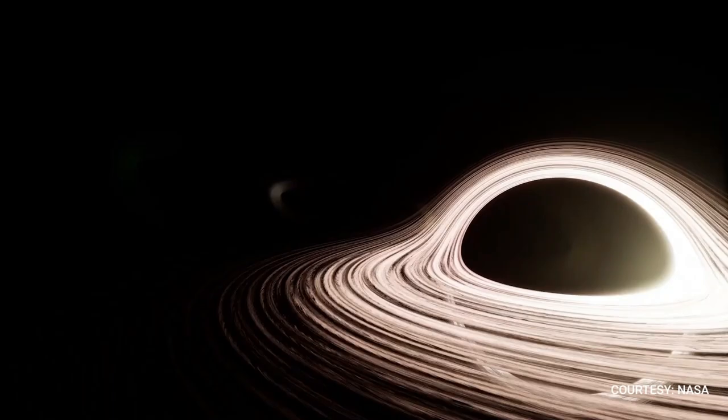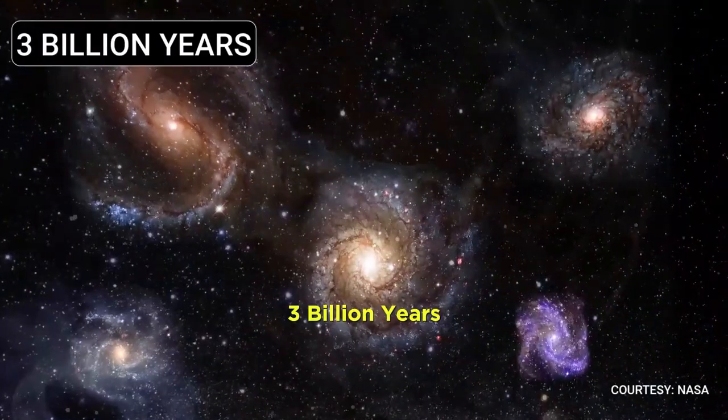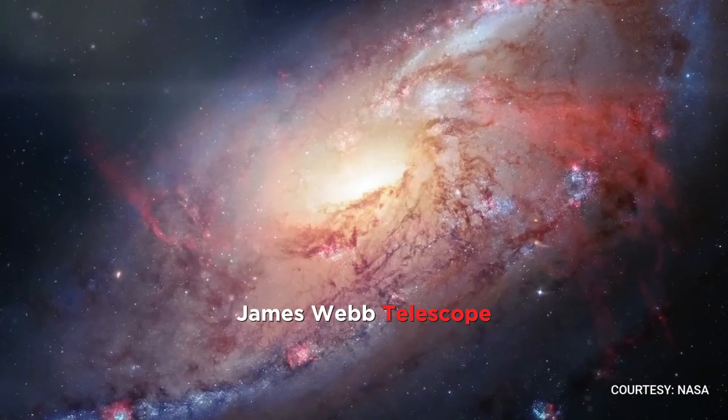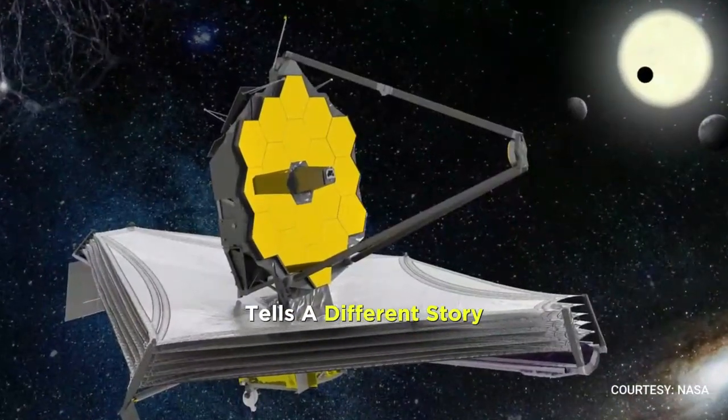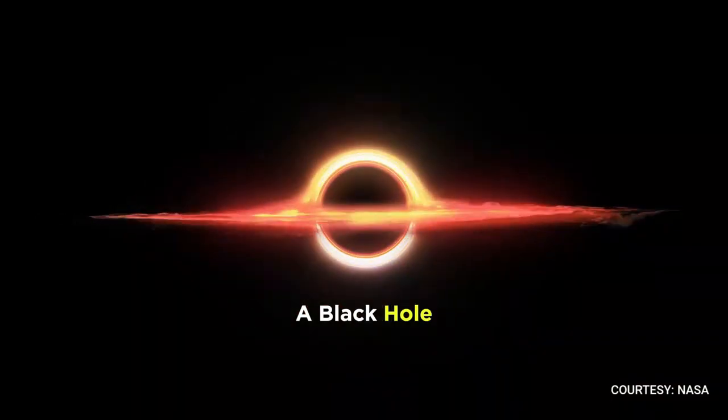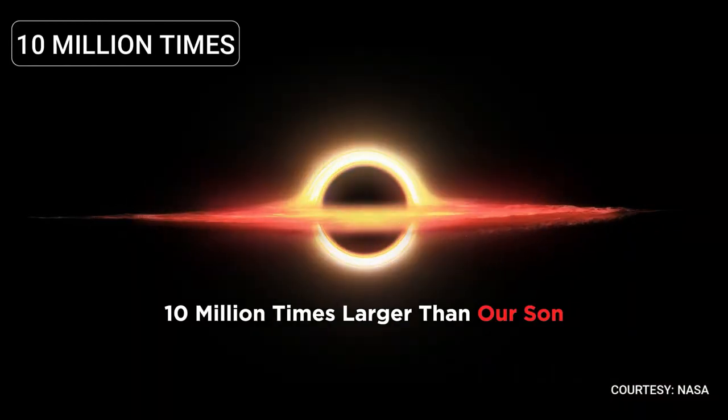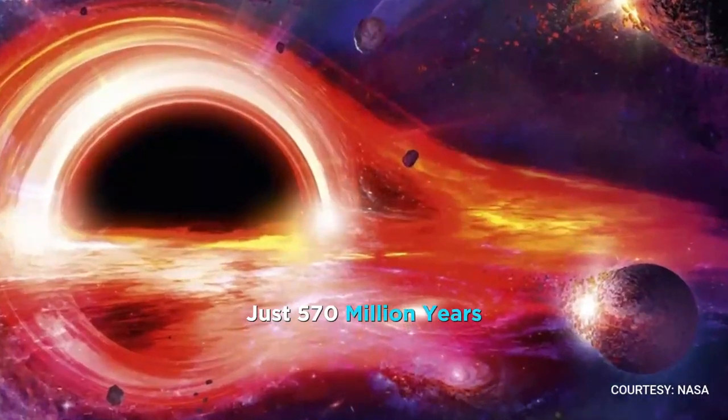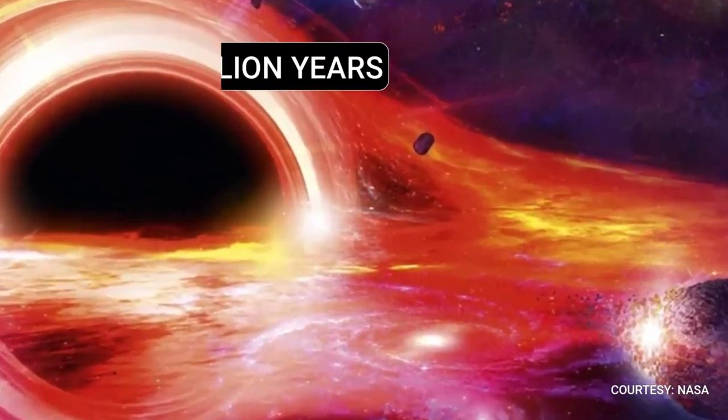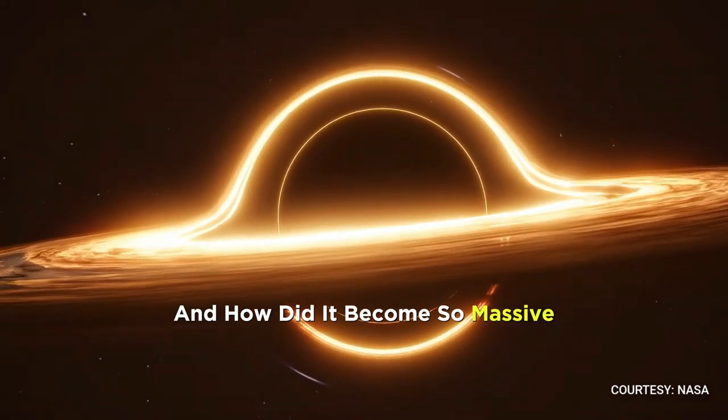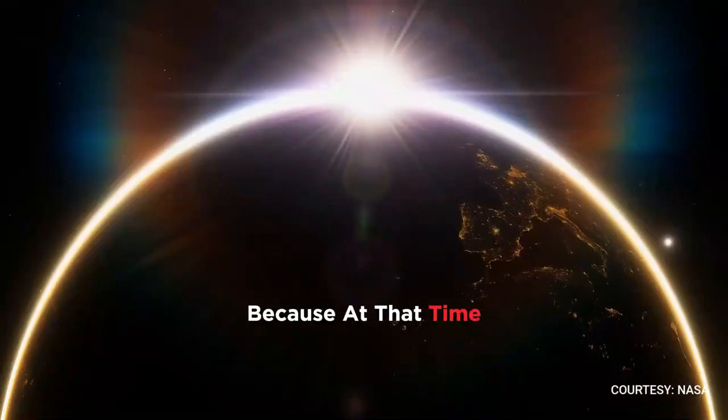On one hand, scientists say that it took at least 3 billion years for the universe to reach its perfection, while on the other hand, James Webb telescope tells a different story. It says that forget about 3 billion years. A black hole of a size 10 million times larger than our sun was already in existence just 570 million years after the Big Bang. How did this black hole form so quickly, and how did it become so massive?